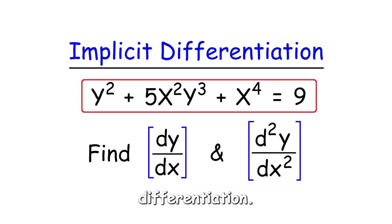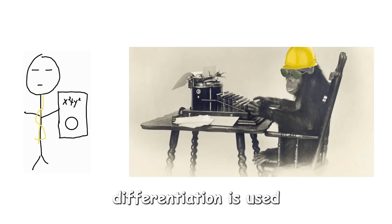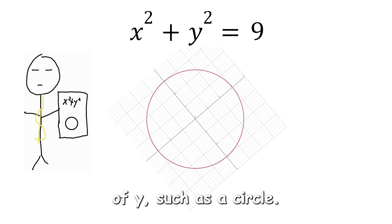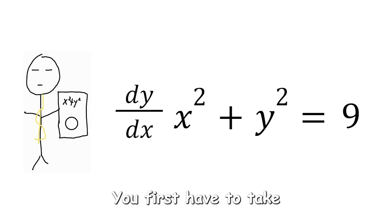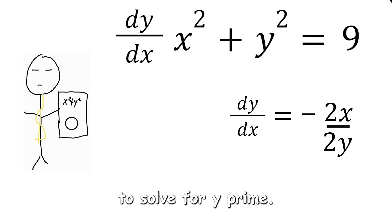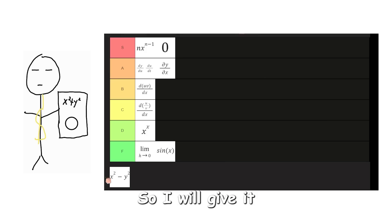Implicit differentiation. Implicit differentiation is used when one value of X can have multiple values of Y, such as a circle. You first have to take the derivative of the equation with respect to X, then rearrange to solve for Y prime, then boom, you have found the derivative of the equation. Other than for two weeks in my Calc I class, I haven't needed to use implicit differentiation, and it was quite a pain in the ass to learn, so I will give it the C tier.